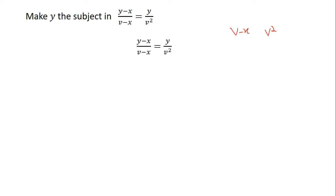Now, as we saw in the previous video, whenever one of the denominators or both of them are expressions, in order to get the LCM, multiply the denominators and use that as the LCM. So the LCM we are going to use is the product of the denominators, which is v squared times (v minus x). I am going to write it as v squared into bracket (v minus x). This will be the LCM that we will be using: v squared times (v minus x).